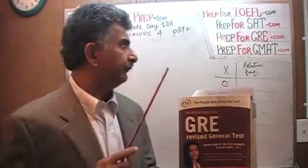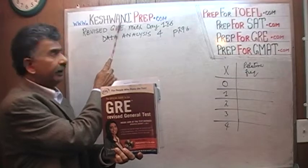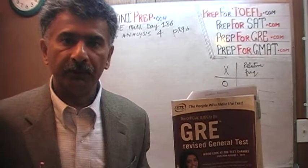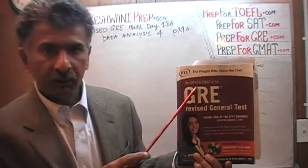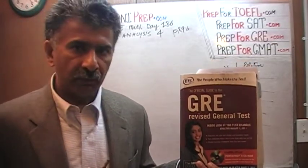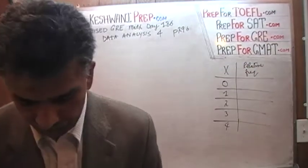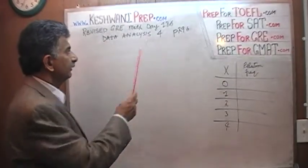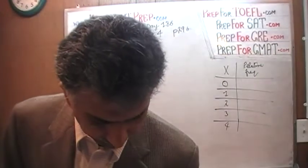Hello, my name is Keshwani — that is K-E-S-H-W-A-N-I. We are here because we want to prepare for the GRE. We have been solving GRE math problems out of this book, the Official Guide to the GRE, the revised edition. If you do not own this book already, you are going to need it. The problem we are about to solve is on page 296, data analysis problem number 4, and today is our lesson number 186.